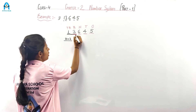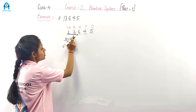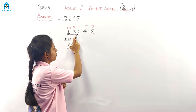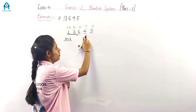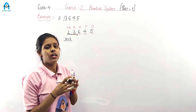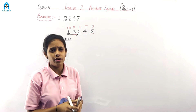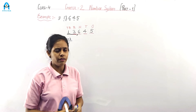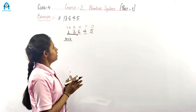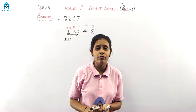We use a comma after the thousands. So this is read as thirteen thousand, six hundred forty-five. Here we learned how to read a five-digit number using a place value chart.